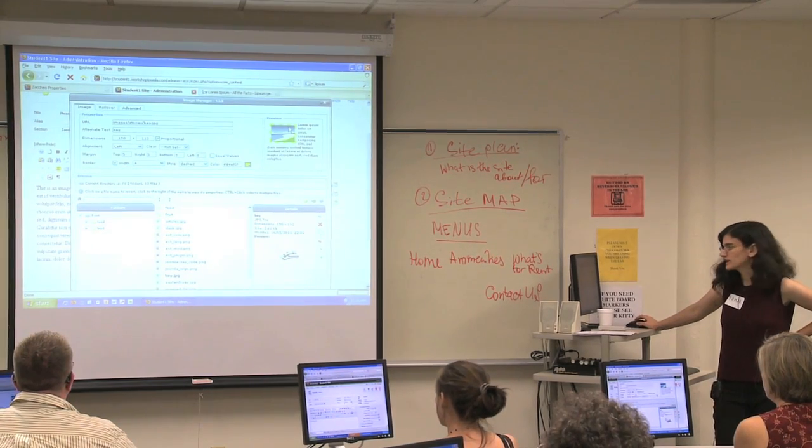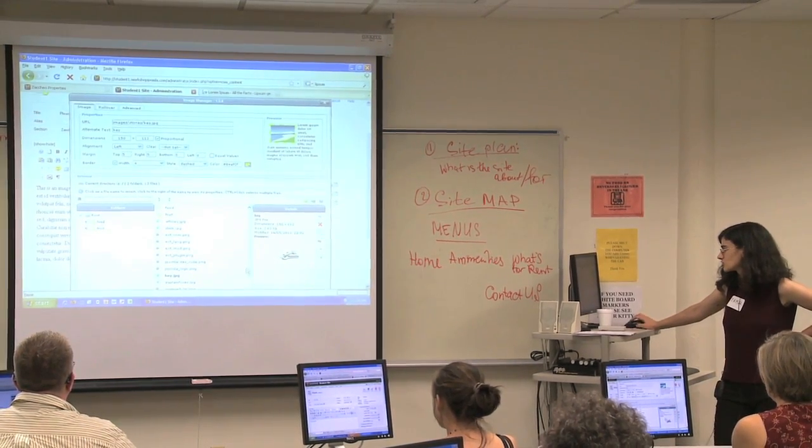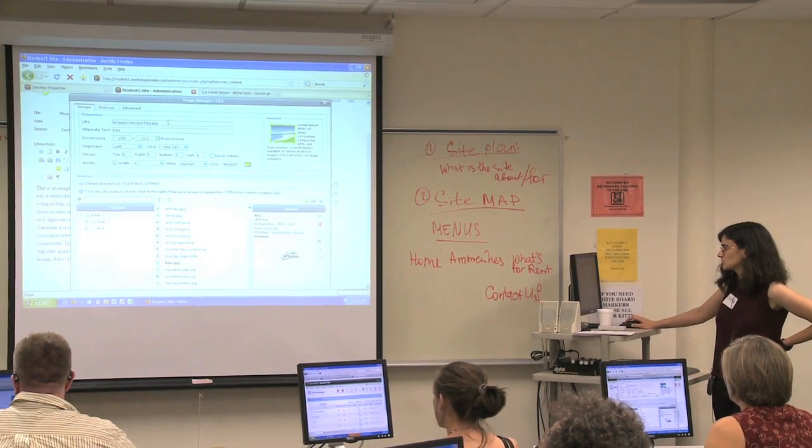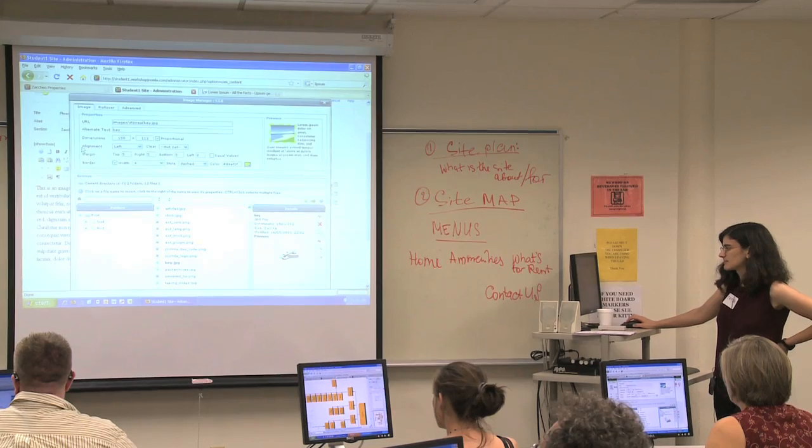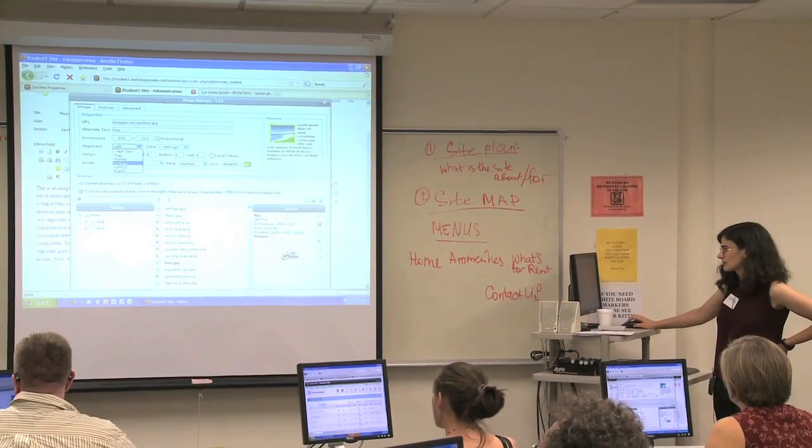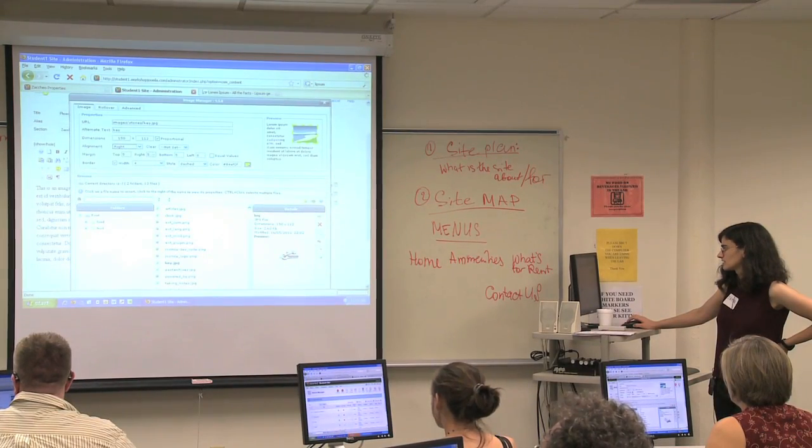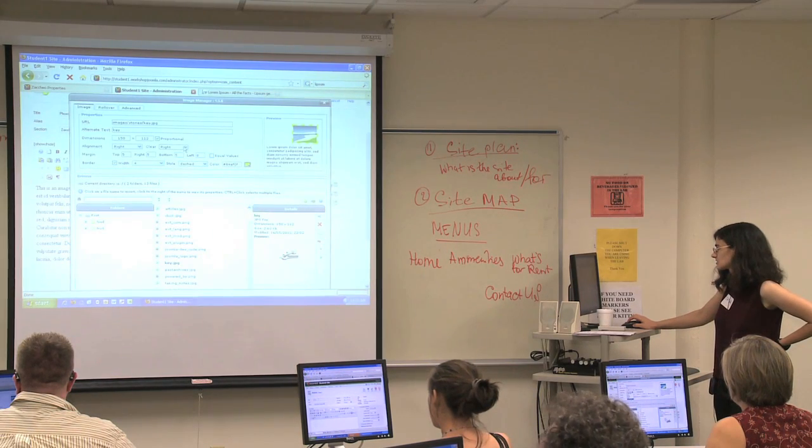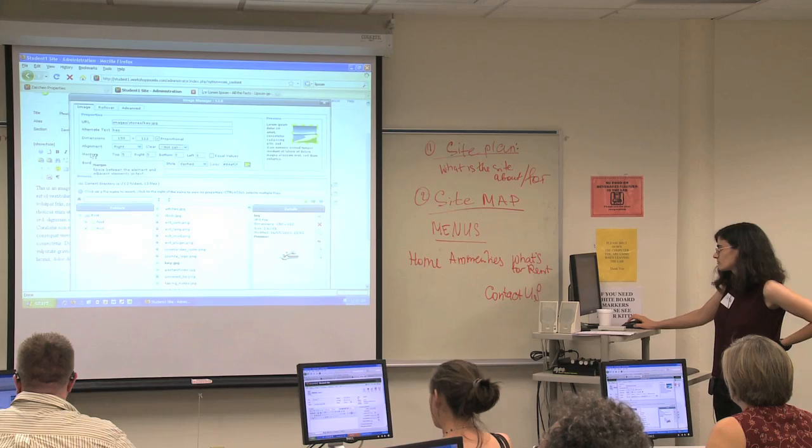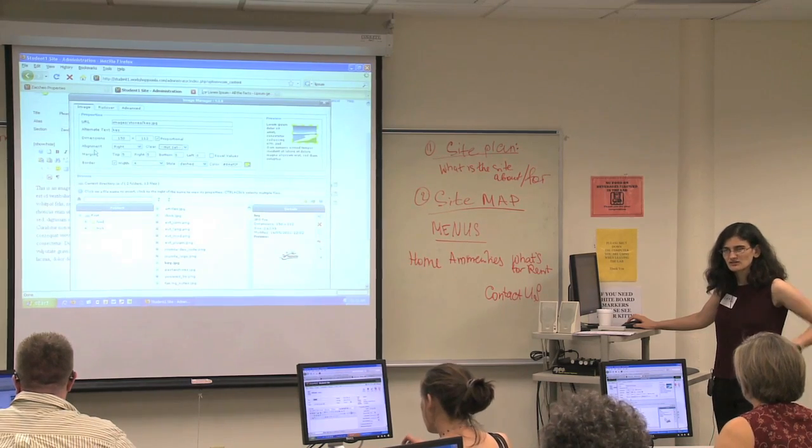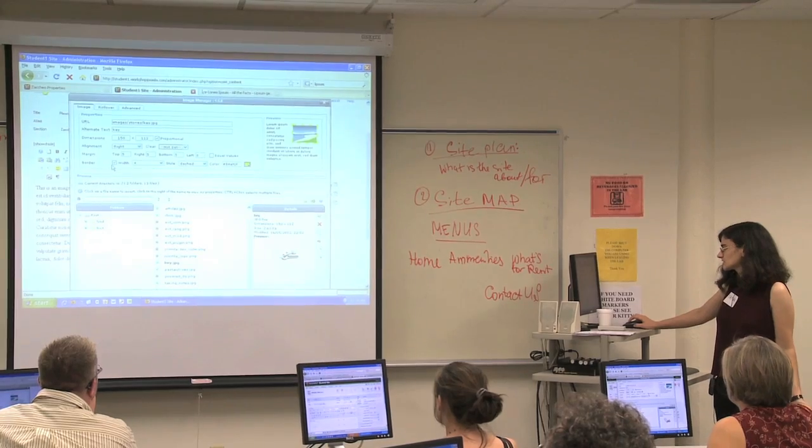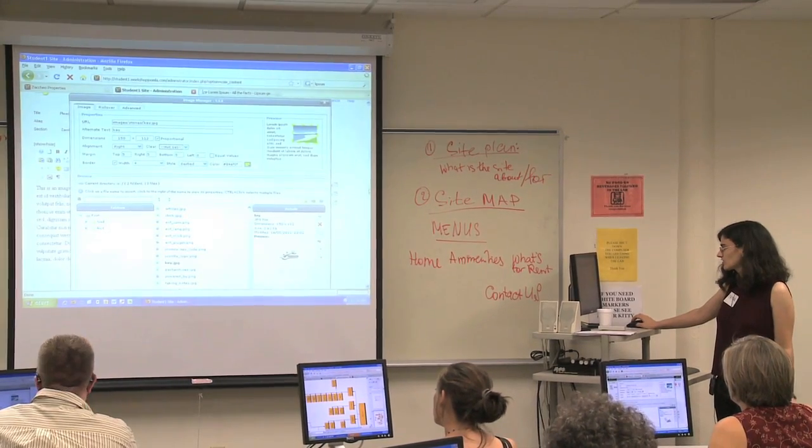So all we did right now is we went into insert edit image. We chose an image that was already on the website, in this case, a key. We made sure that it had a URL. And we played with this a bit. We said alignment, and this is all stuff you can go back and forth with. Left, right, clear, how the text wraps around the image. Margin gives it a little space, because usually if the text and the image are scrunched up right next to each other, it's hard to read. And you can choose to have a border, although I rarely do.